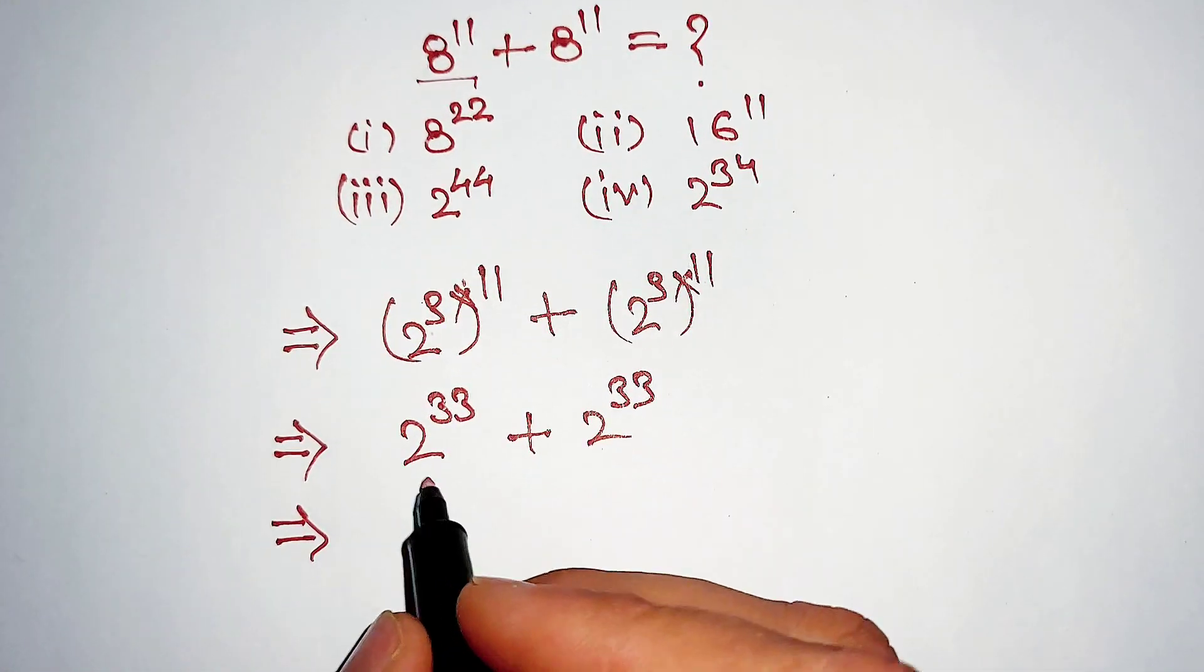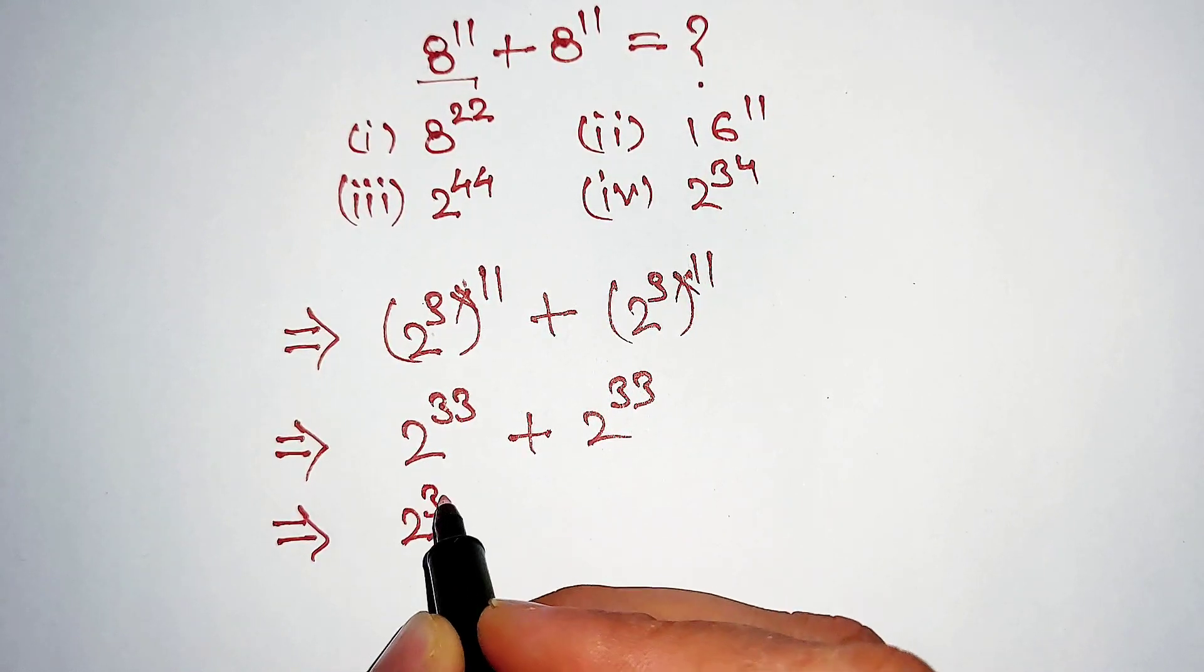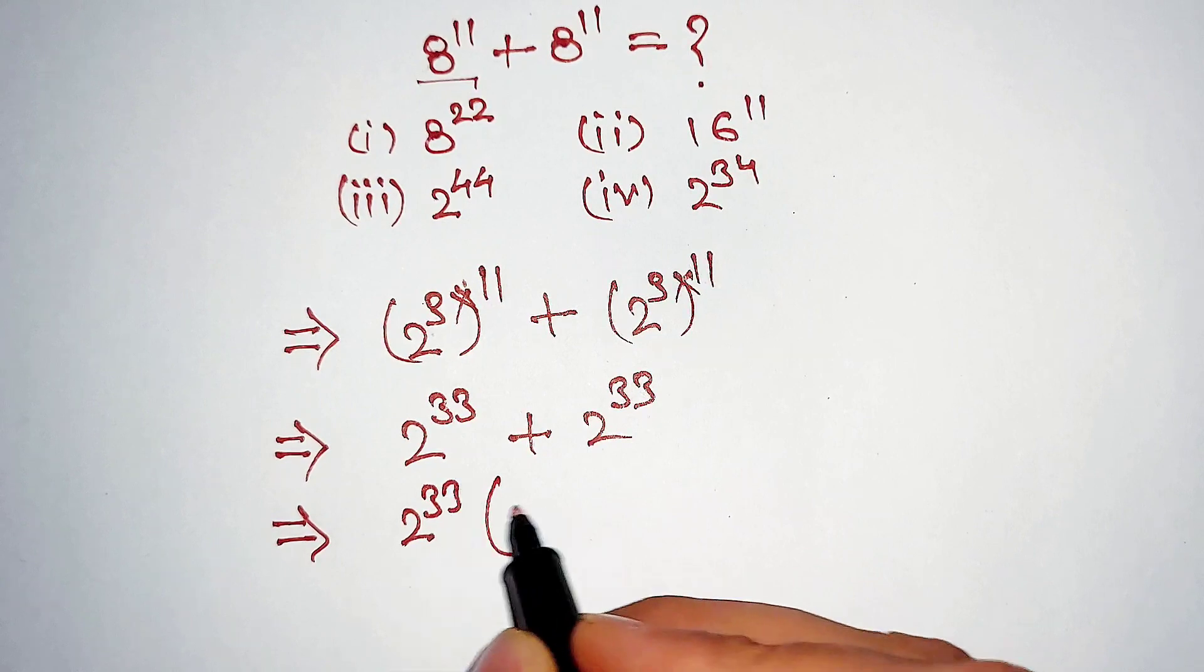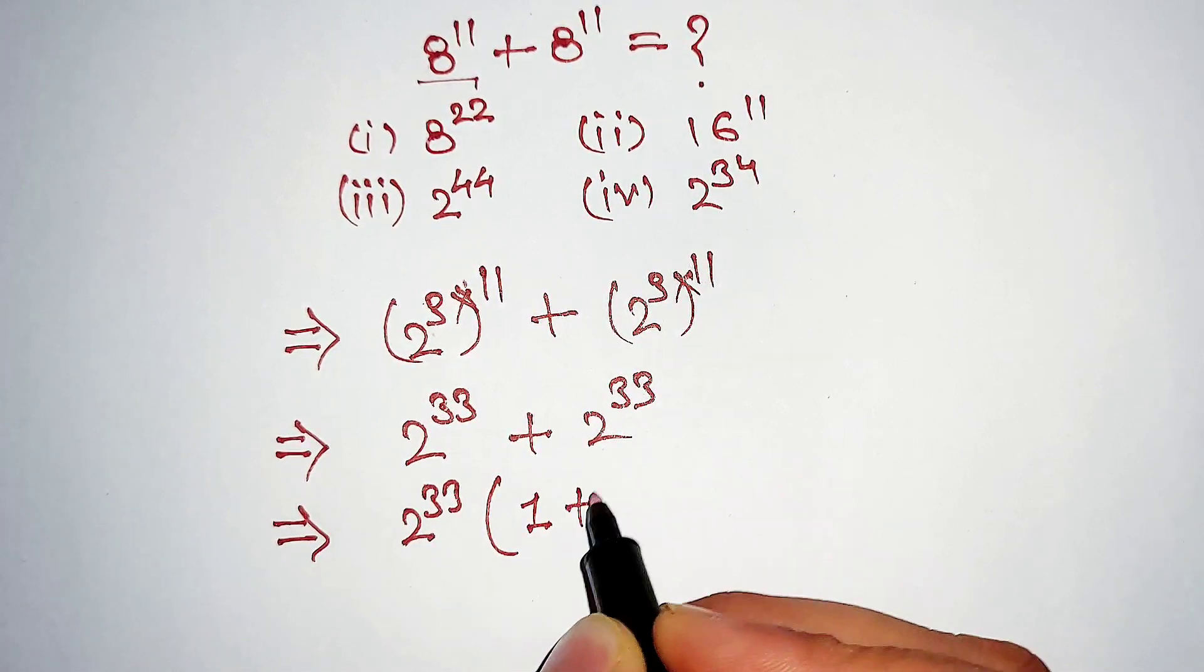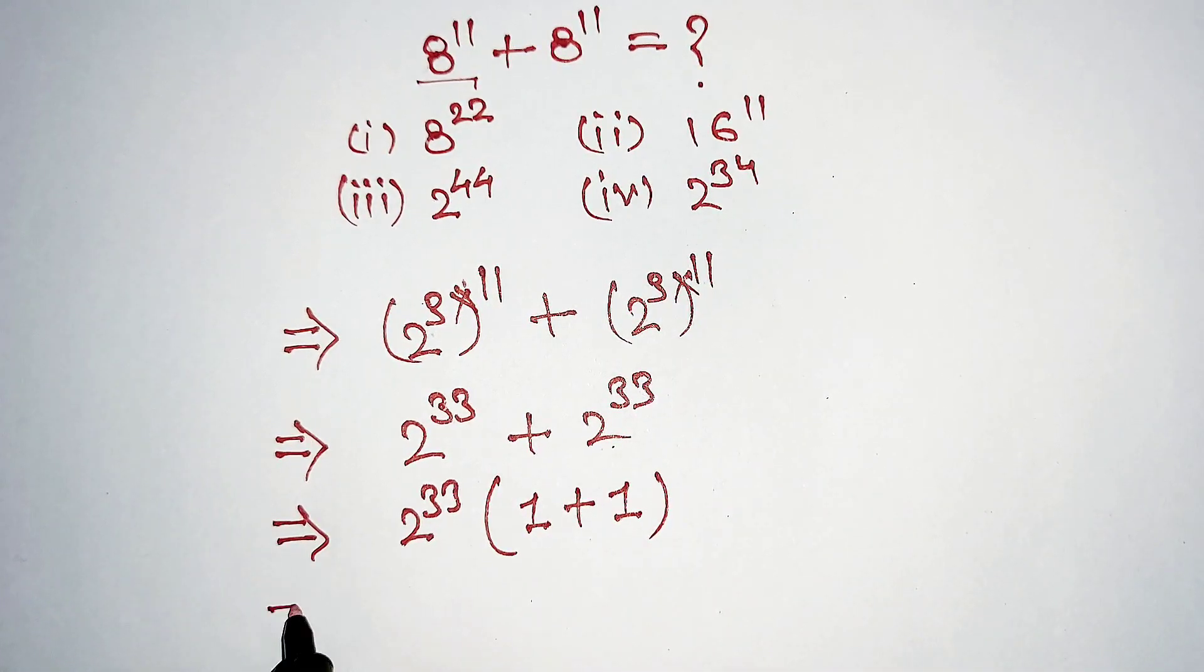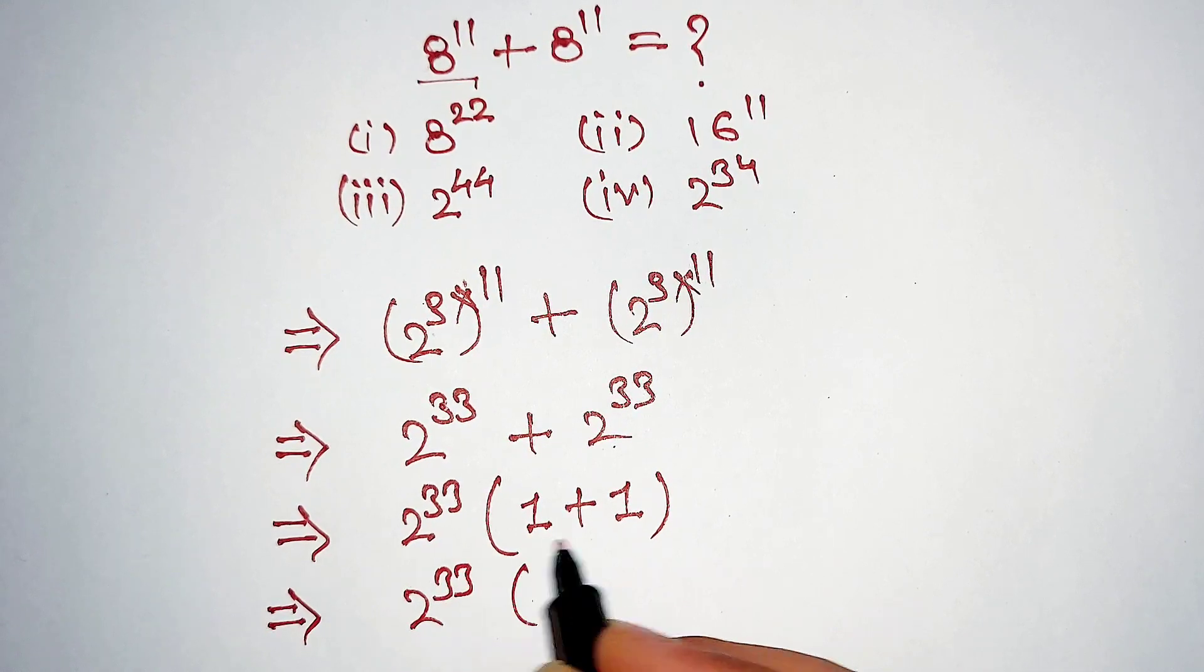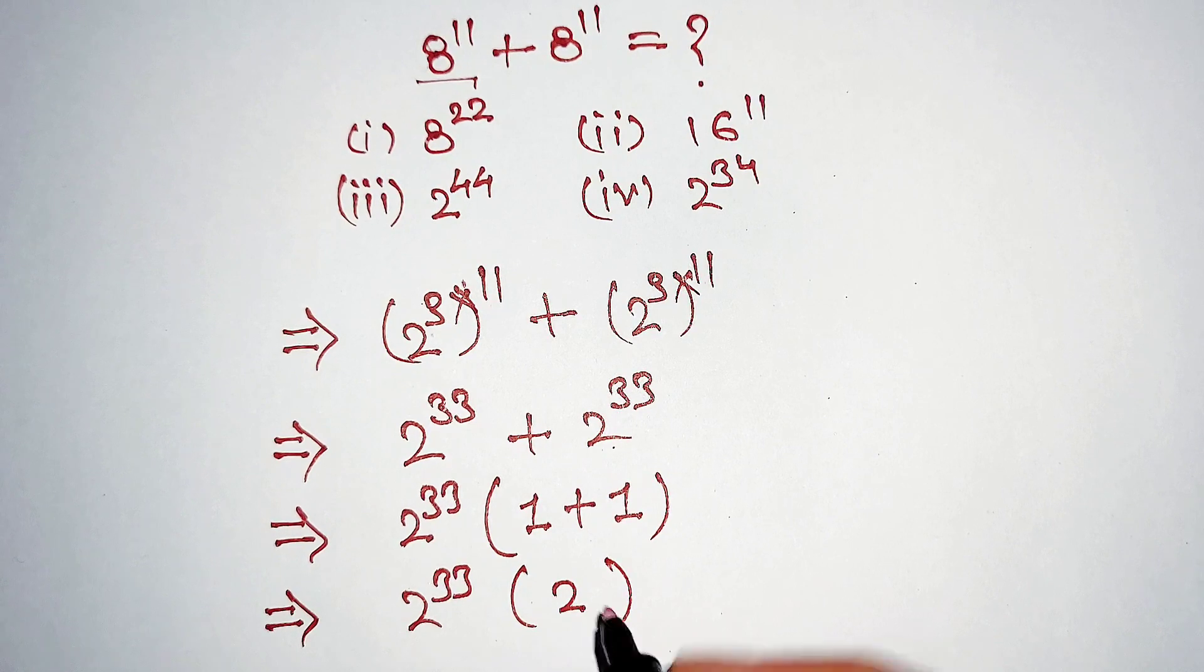Now we will take out 2 power 33 as a common. This divide by this is equal to 1, plus this divide by this is equal to 1. Further solving, 1 plus 1 is 2, and we can write 2 as 2 power 1.